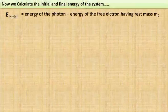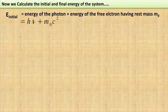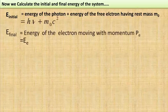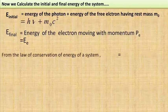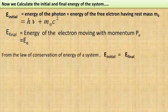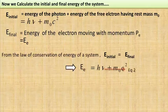Now let us calculate the initial and final energy of the system. The initial energy is E_initial = energy of the photon + rest energy of the free electron = hν + m₀c². The final energy is E_final = energy of the moving electron = E_e. By conservation of energy, E_e = hν + m₀c². We call this equation number 2.